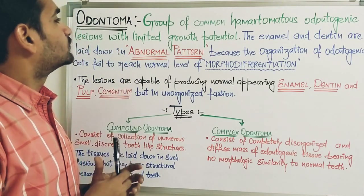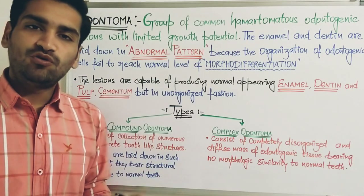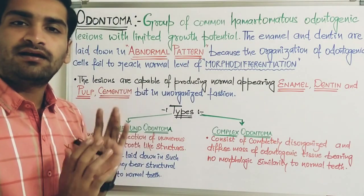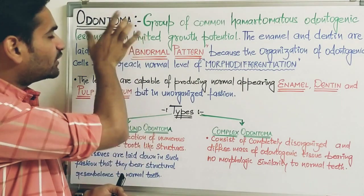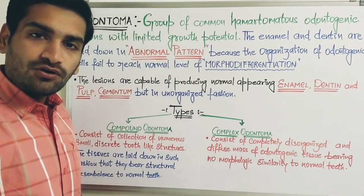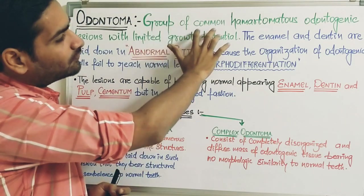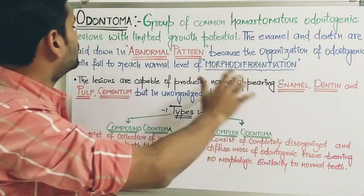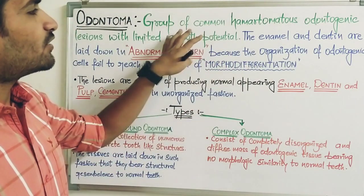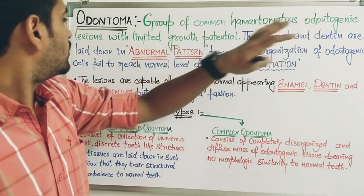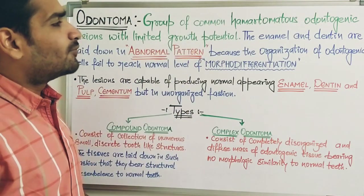So what is odontoma? From the name we can guess that it is some tumor of odontogenic origin — any tumor that arises from odontogenic origin. It is a group of common odontogenic lesions with limited growth potential.